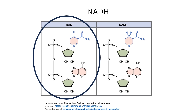Specifically, what NAD+ does is oxidize intermediates within these processes. It does that by taking one electron and one hydrogen from an intermediate. Since a hydrogen has an electron within it, that is the same thing as saying it takes an electron.